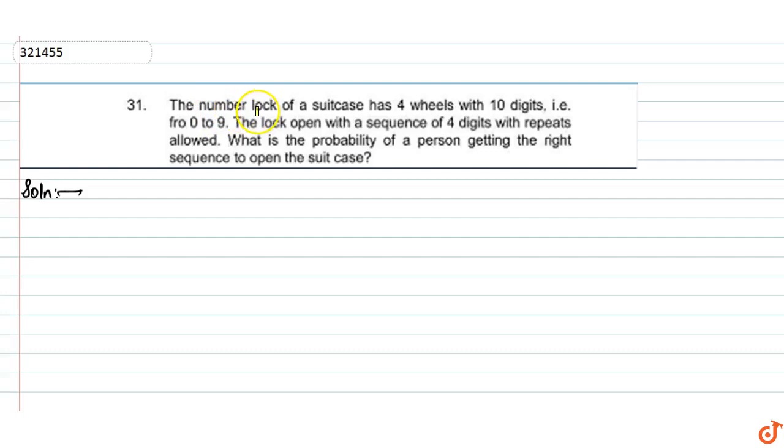In this question, the number lock of a suitcase has four wheels with 10 digits, 0 to 9. The lock opens with a sequence of four digits with repeats allowed. What is the probability of a person getting the right sequence to open the suitcase? If we look at the favorable outcome, then what is the way of a lock open?